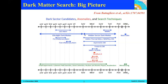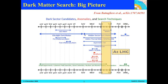Hidden sector dark matter and ultralight dark matter cover a very large mass range, while QCD axions and WIMPs cover a much narrower range. In this talk, the focus will be on the GeV to TeV search region, which is the focus of the LHC searches.